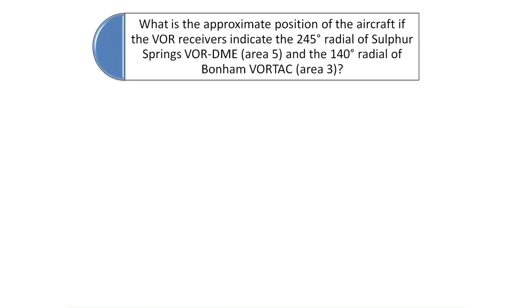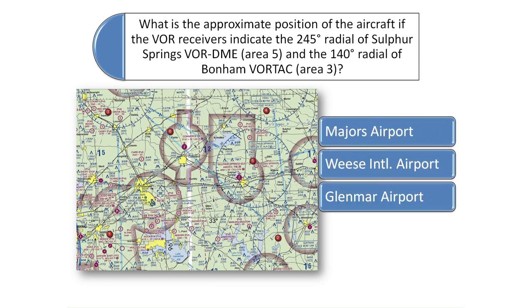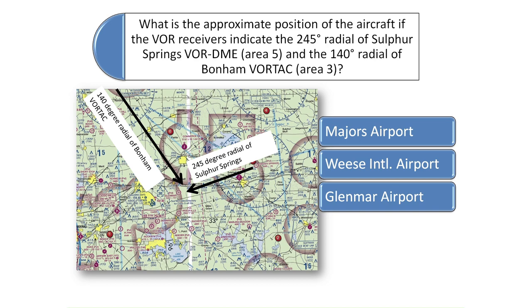Question 2 asks: what is the approximate position of the aircraft if the VOR receiver indicates the 245 degree radial of Sulphur Springs VOR Area 5 and the 140 degree radial of Bonham-Vortac Area 3? To solve this problem, draw two lines — one on the 245 degree radial of Sulphur Springs VOR and one on the 140 degree radial of Bonham-Vortac. The approximate position of the aircraft would be somewhere over Glenmar Airport, where the two radials meet.